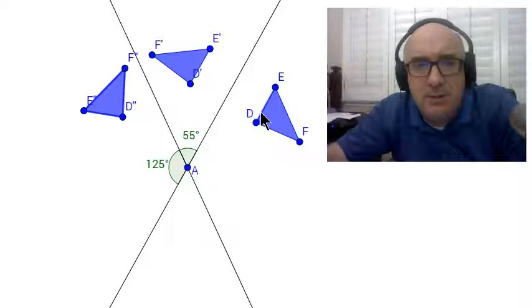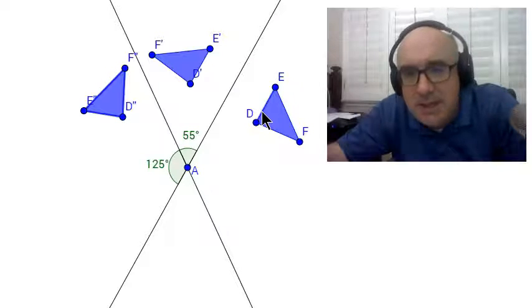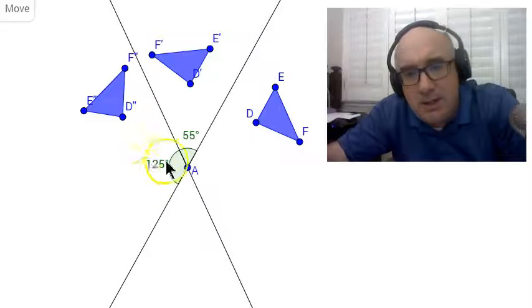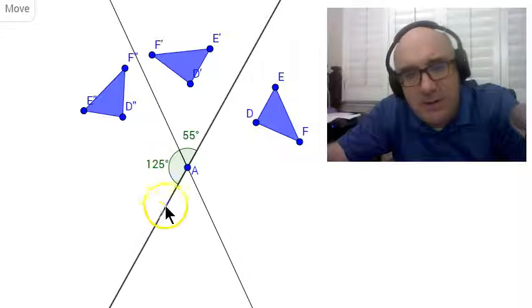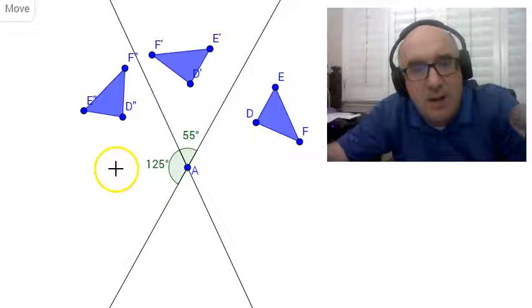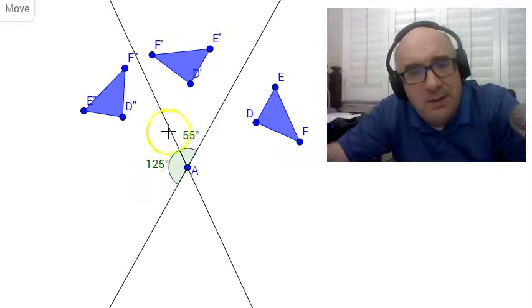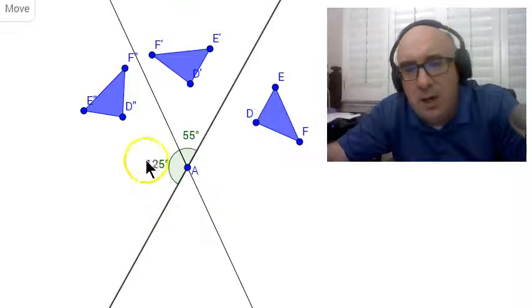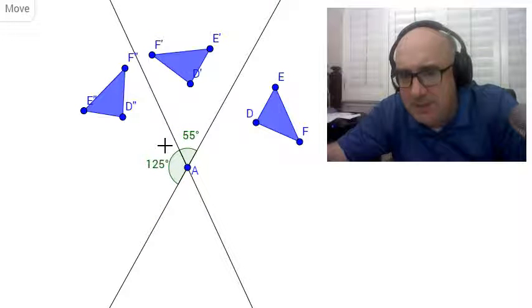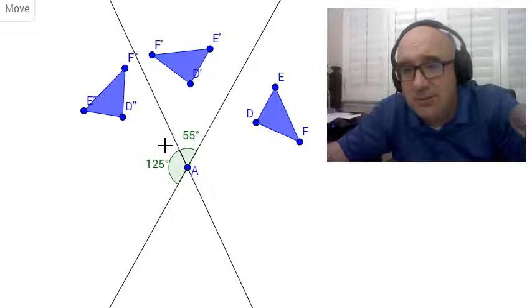Now some students, not many, but some see that this could happen a different way. They see this 125, and they think you jumped over this line, so over here, and then you jumped over this line, over here. And they say you went through a 125 degree angle. That is actually true, we did.